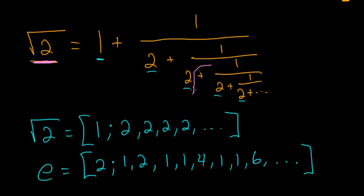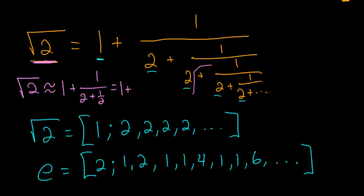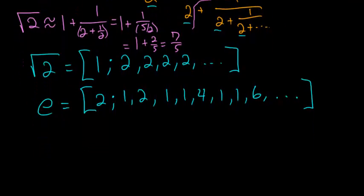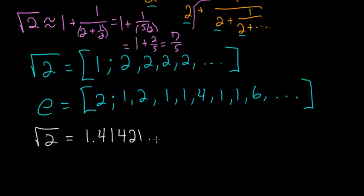For instance, cutting it off here, the square root of 2 is approximately equal to 1 plus 1 over 2 plus 1 half. Simplifying, we have 1 plus 1 divided by 5 halves. And 1 over 5 halves is just 2 fifths. So 1 plus 2 fifths is equal to 7 fifths. The square root of 2 as a decimal is equal to 1.41421 and that goes on forever, and 7 fifths is simply 1.4.